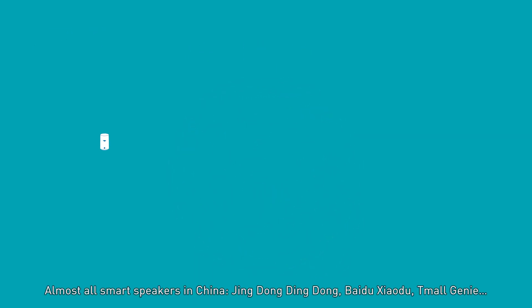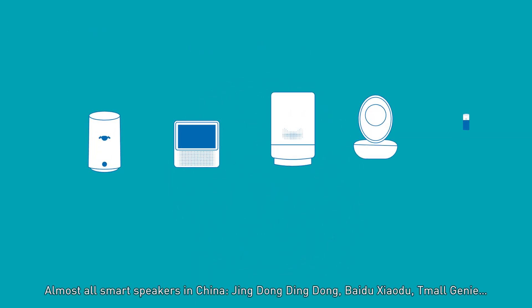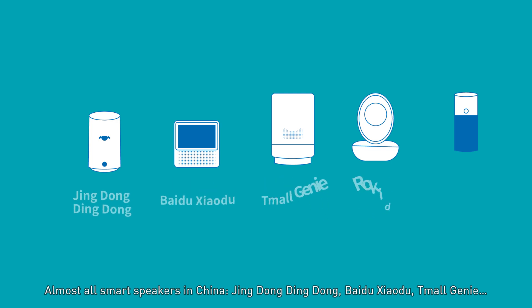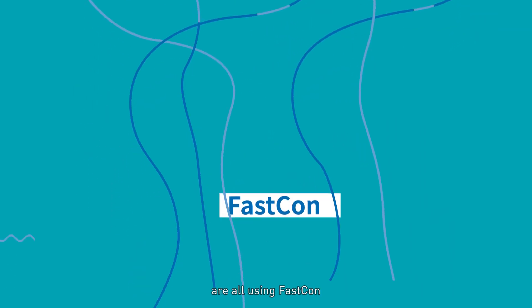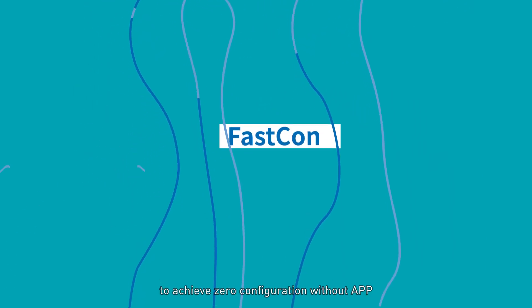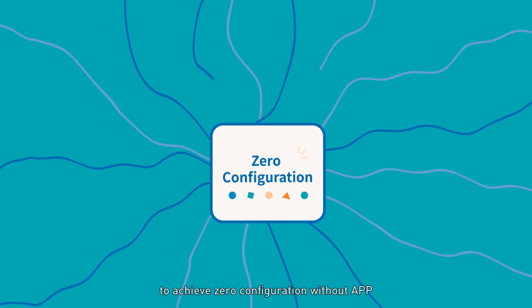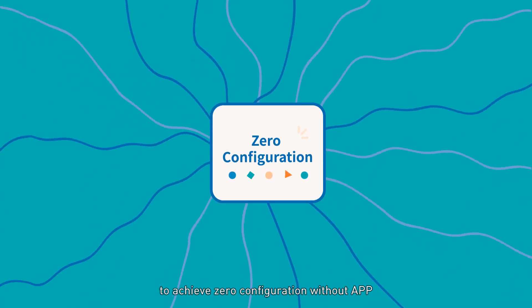Almost all smart speakers in China — Jingdong Dingdong, Baidu Xiaodu, Kimal Genie — are all using FastCon to achieve zero configuration without an app.